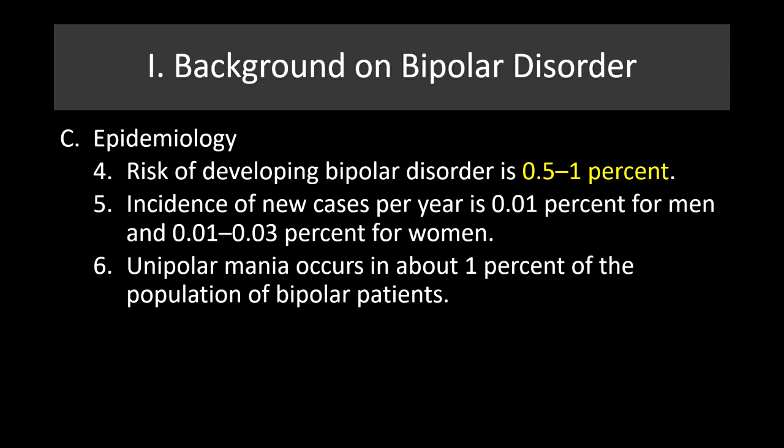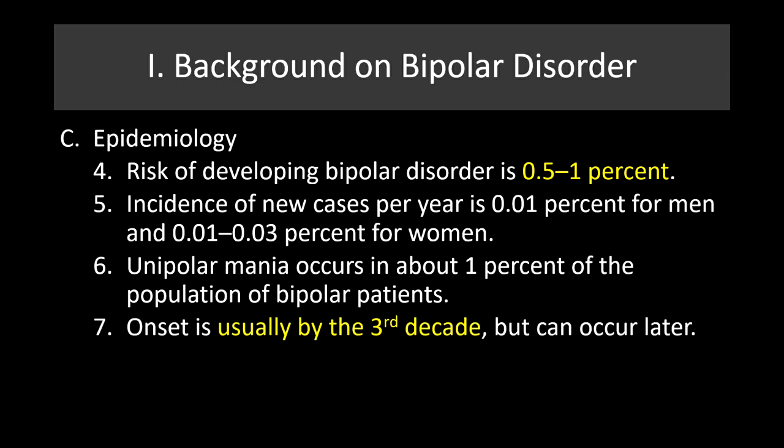The risk of developing bipolar disorder is about half to 1%. Incidence of new cases per year is about 0.01% for men and 0.01% to 0.03% for women — very low prevalence, but we must ensure those with the disorder are treated appropriately. Unipolar mania occurs in about 1% of bipolar patients. Onset is usually by the third decade. We need to encourage people to get into treatment and be mindful when working with and managing those who have this disorder.